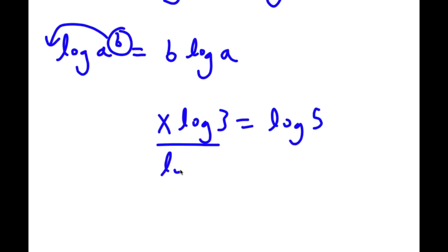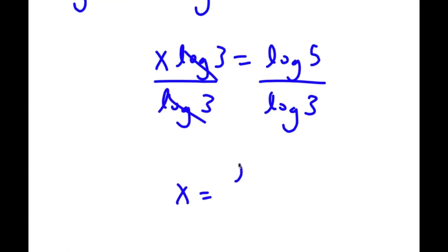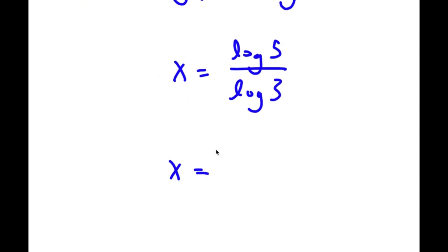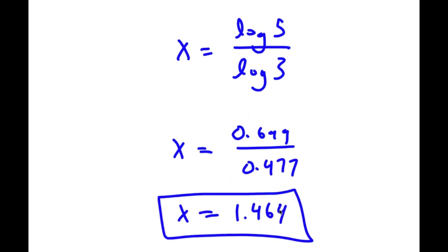Now I'm going to divide both sides by log 3. These two cancel out, and now I'm left with x is equal to log 5 over log 3. Log 5 is equal to 0.699, and log 3 is equal to 0.477. So if you divide these two, you get 1.464. So this is my answer.